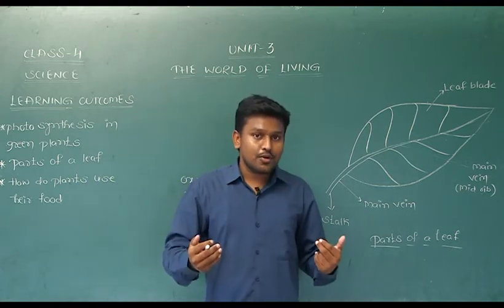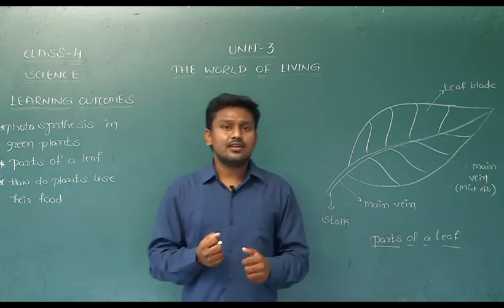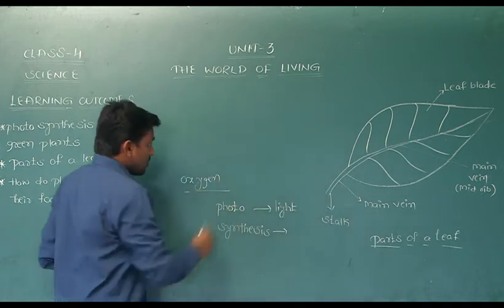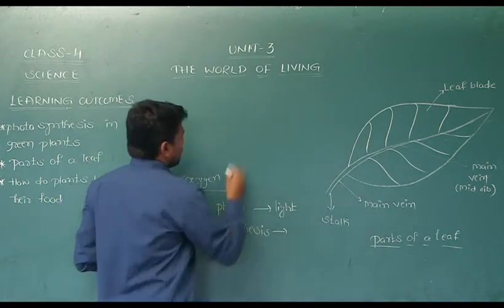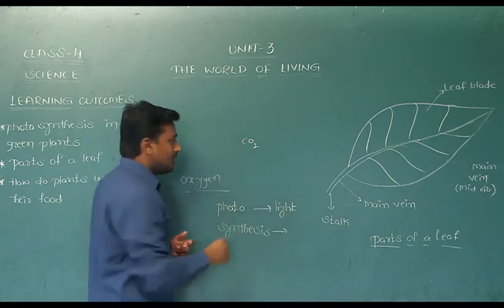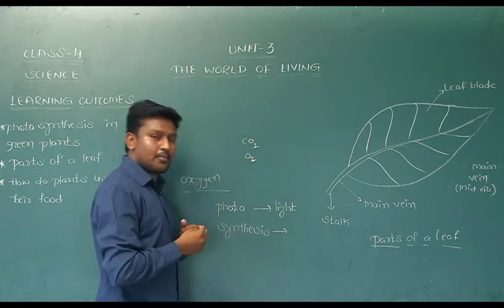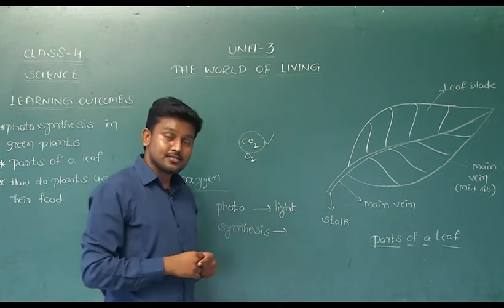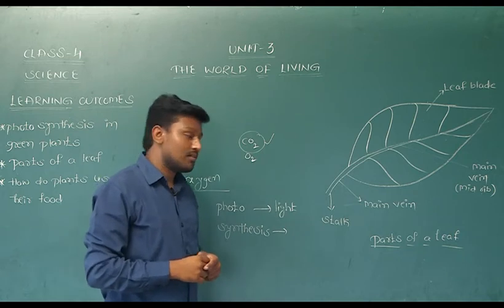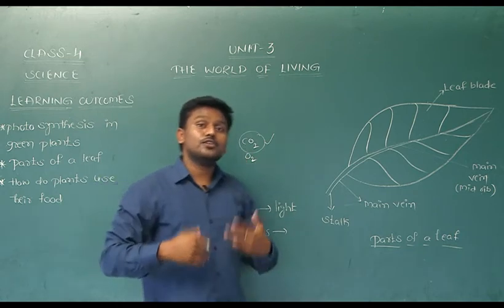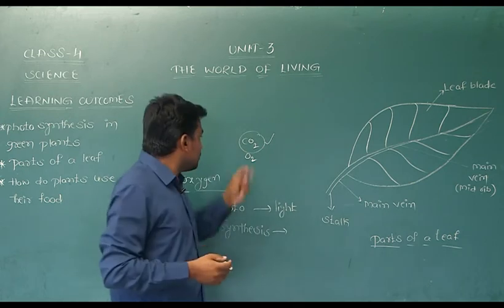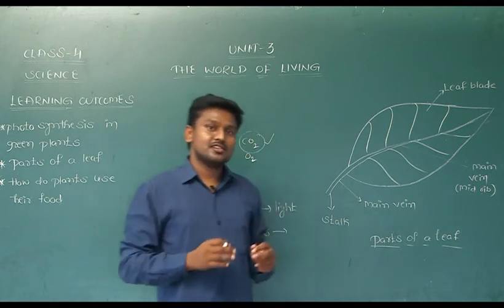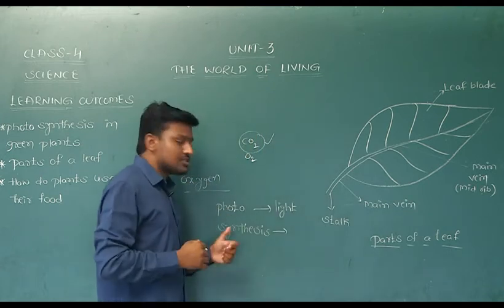How does this leaf produce food? It needs some materials. We breathe out carbon dioxide and we breathe in oxygen. But plants require this carbon dioxide. For what reason? They require this carbon dioxide to produce food. They use this carbon dioxide in the production of the food process, and that process is called the photosynthesis process.